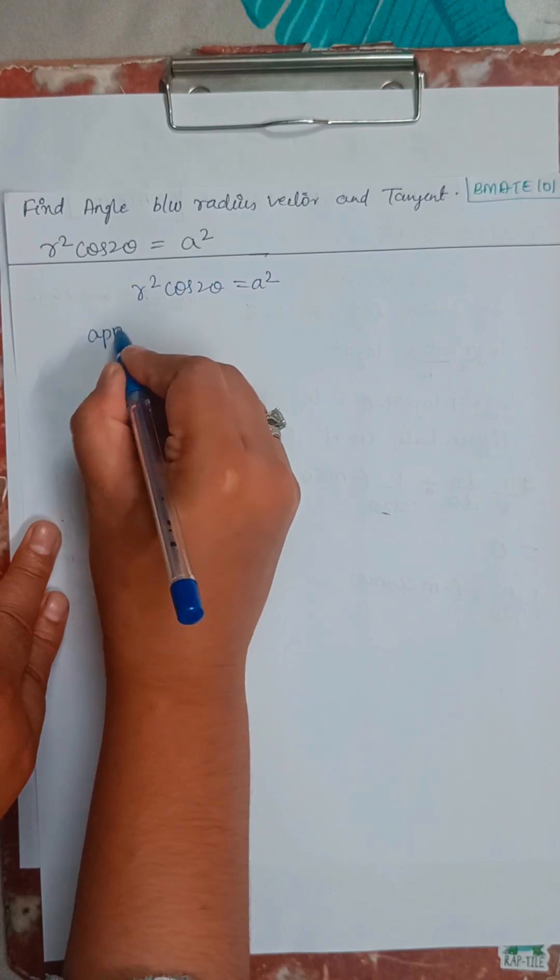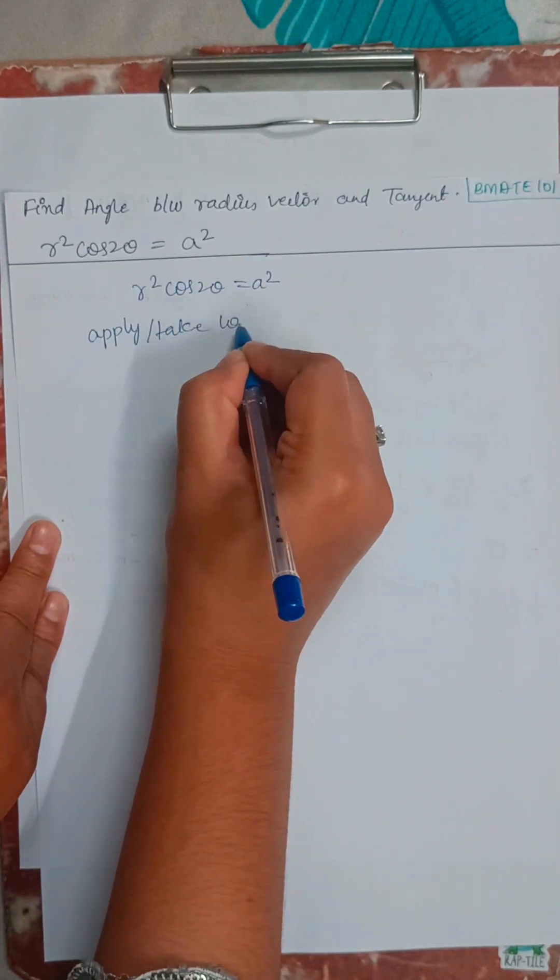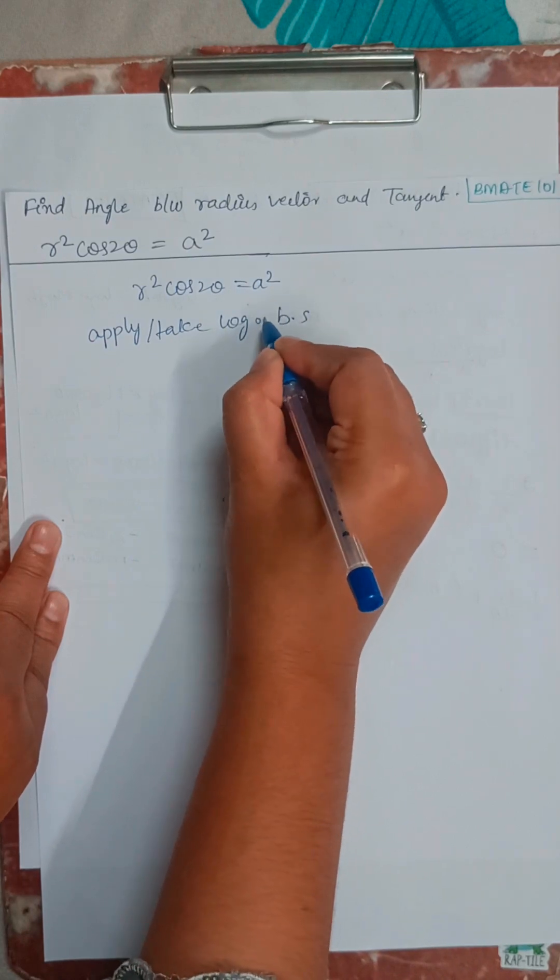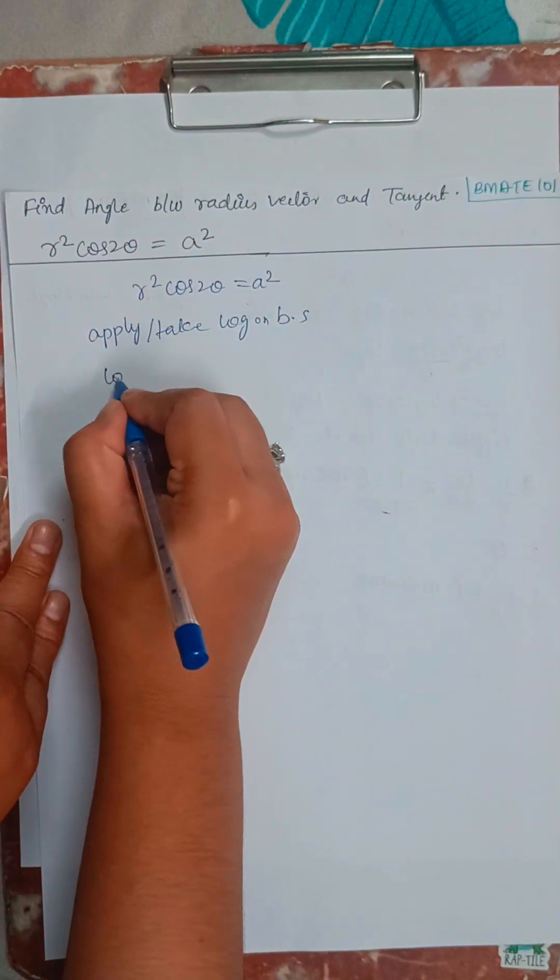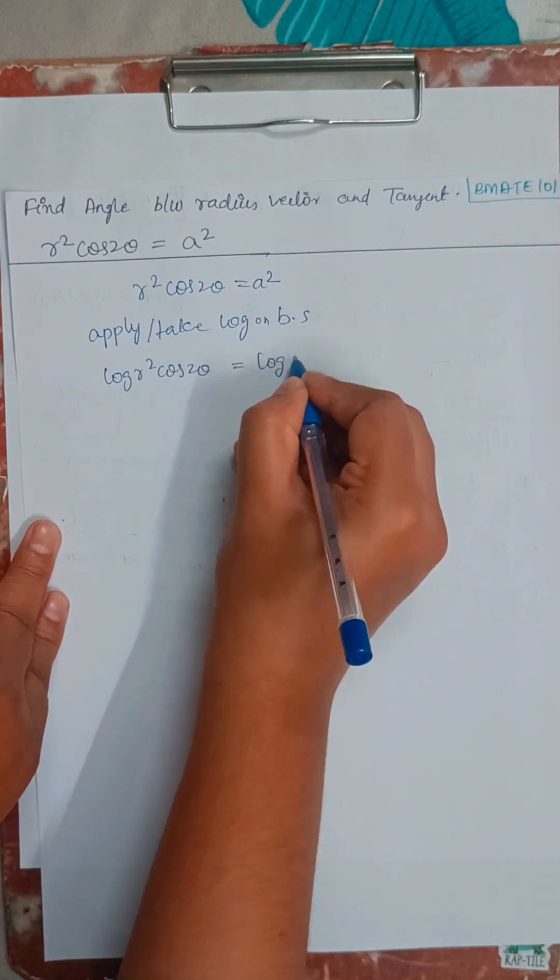We will apply or take log on both sides. So I will take log r squared cos 2 theta equals log of a squared.